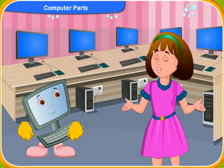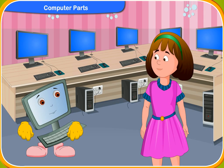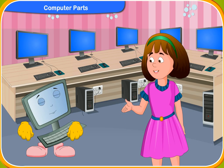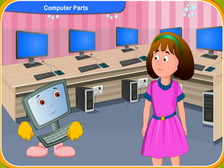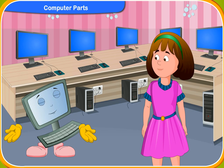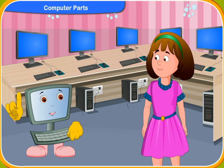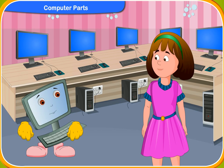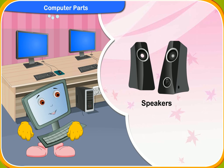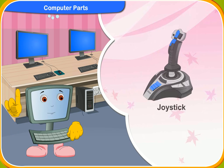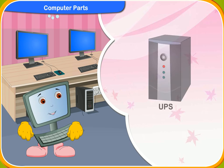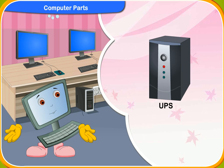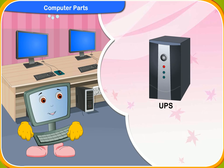I have seen Uncle Ravi's computer. He has a lot of other things attached to the computer, beside the mouse, keyboard or the CPU. What are those, Klico? Yes, Rennie. You can add other parts to a computer if you require. Some of them are speakers, printers, joysticks and UPS. These parts are called a computer's peripheral devices.